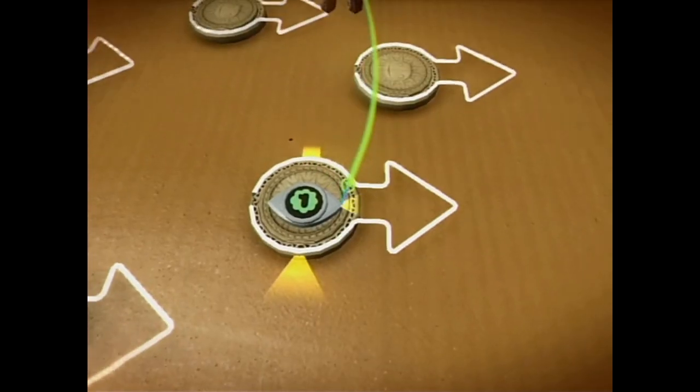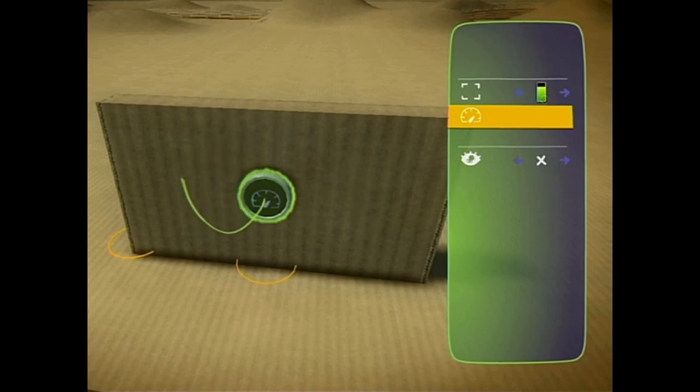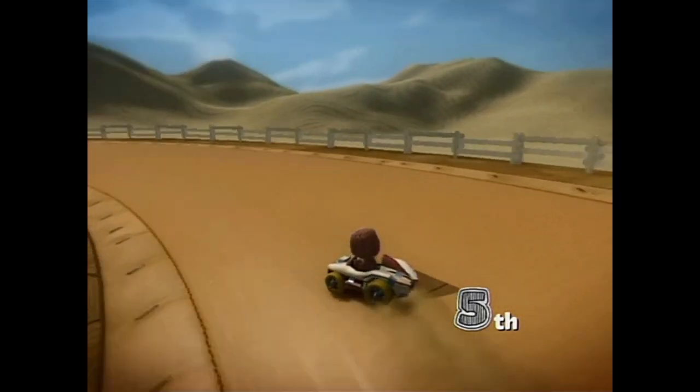The race position sensor sends out a signal based on the cart's current standing in the race. This sensor sends out a signal which is, in effect, a percentage based on the race's place.